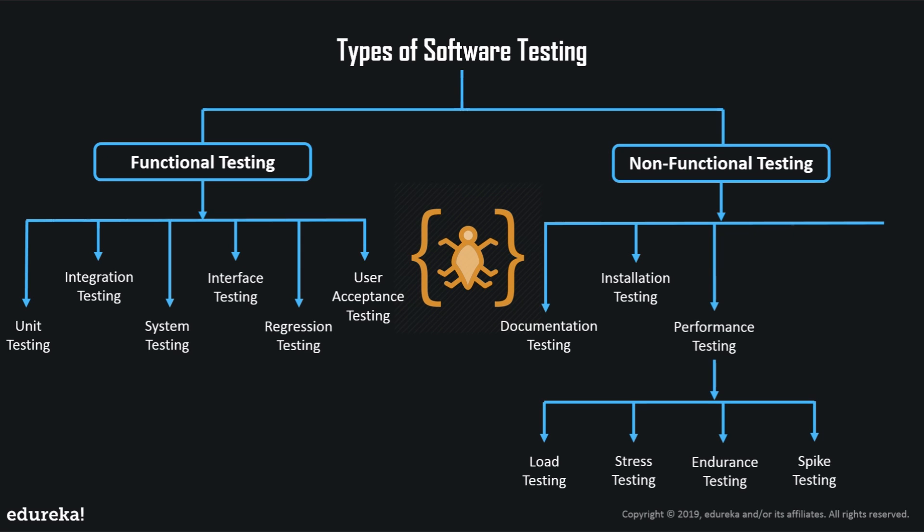Load testing is used to monitor the response time and staying power of any application when the system is performing under heavy load. Stress testing is used to determine or validate an application's behavior when pushed beyond normal or peak load conditions. Endurance testing involves testing a system with the expected amount of load over a long period of time to find behavior. Spike testing validates performance characteristics when the system is subjected to varying workload models and load volumes.